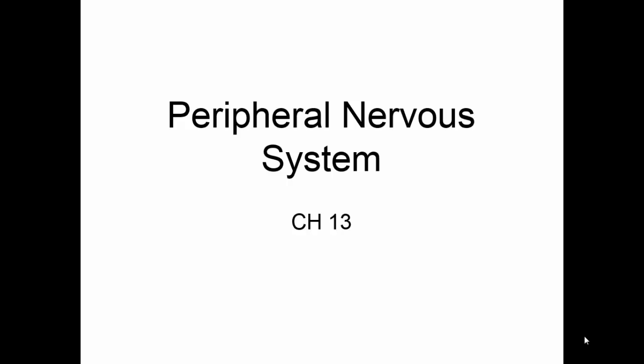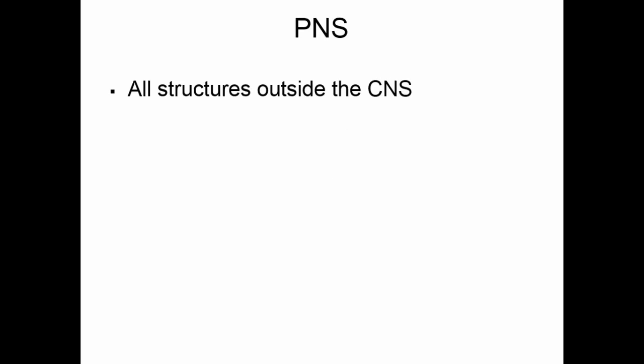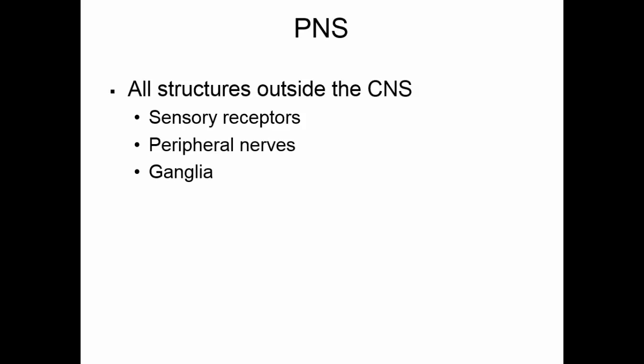The two major parts of the nervous system are the central nervous system and the peripheral nervous system. The peripheral nervous system is all of the structures outside the central nervous system: the sensory receptors, the peripheral nerves, the ganglia, and the motor endings of the efferent nerves.